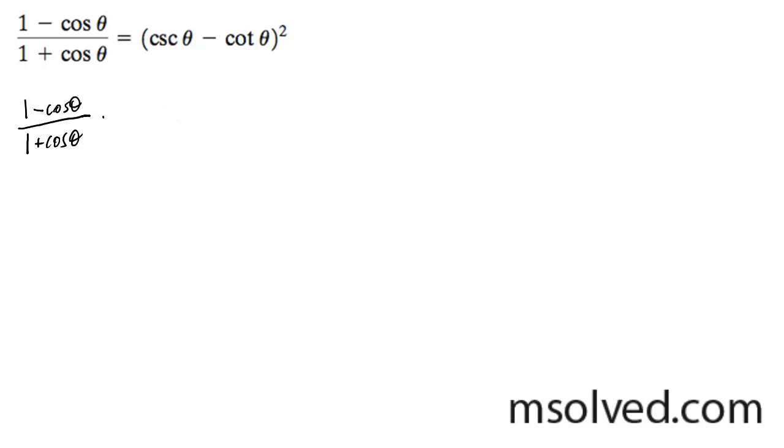To further simplify it, what I'm going to do is take the conjugate of the denominator here, so it's going to be 1 minus cosine theta, 1 minus cosine theta.